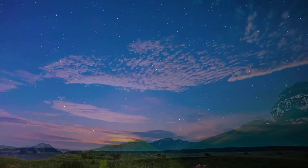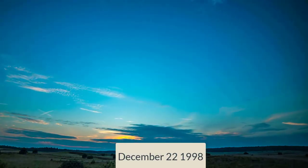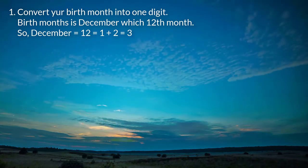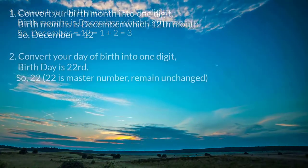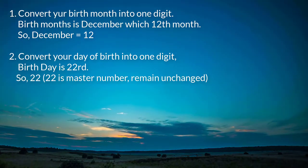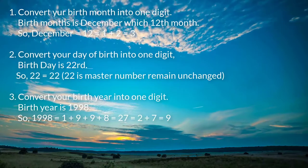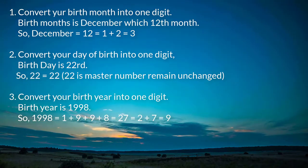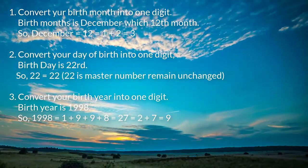Let's see another example. Example 2: Follow the steps to calculate someone's life path number whose birthday is December 22nd, 1998. Step 1: Convert your birth month into one digit. Birth month is December, which is the 12th month. So December equals 12, equals 1 plus 2 equals 3. Step 2: Convert your day of birth into one digit. Birthday is 22nd. 22 equals 22 — 22 is a master number, remain unchanged. Step 3: Convert your birth year into one digit. Birth year is 1998. So 1998 equals 1 plus 9 plus 9 plus 8 equals 27, equals 2 plus 7 equals 9.